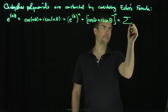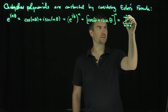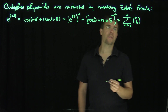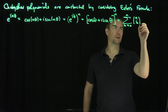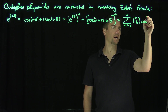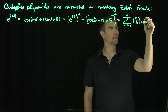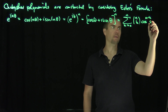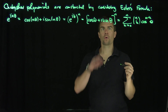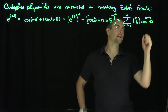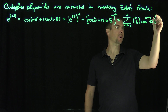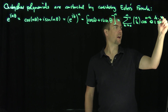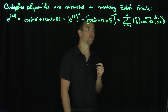The binomial theorem gives us the sum from k=0 to n of n-choose-k times cosine^(n-k)(theta) times i^k times sine^k(theta).